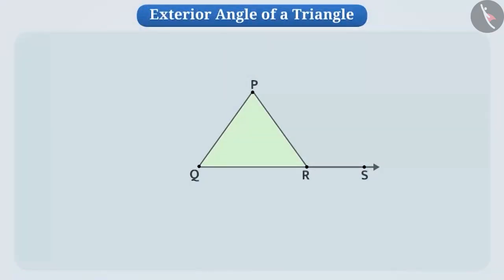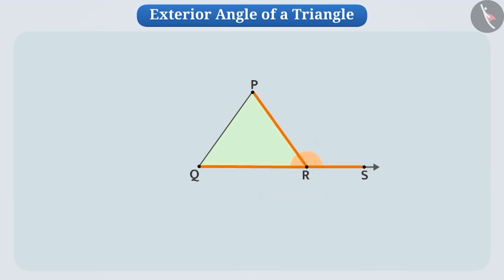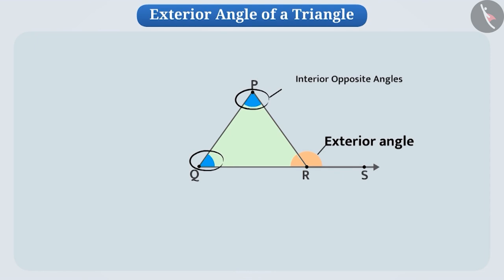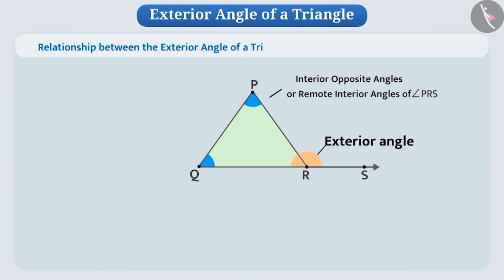Now look at this figure. Angle PRS is the exterior angle of triangle PQR. We can also see that angle QRP and angle PRS are adjacent angles. In addition to the adjacent angle QRP, the remaining two angles of triangle PQR — namely angle RPQ and angle PQR — are called the two interior opposite angles, or the two remote interior angles, of the exterior angle PRS.